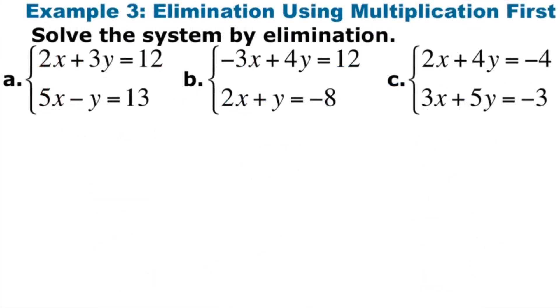But what if they're not set up that nicely? It's not 5y and 5y, it's, you know, 2x and 3x, and then 5y and 4y. What do you do then? So with these examples, you're gonna have to do something first before you can cancel. Notice we have 2x and 5x and 3y and negative y. They can't cancel. But I could change one of these. So let's say I took this one, the second equation, times 3, because then this will become a negative 3y and we can cancel those.